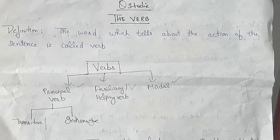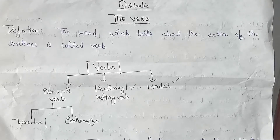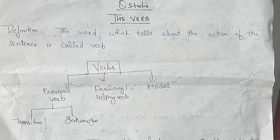So first of all, let's see what is happening. The definition of a verb is: the word which tells about the action of the sentence is called a verb. We are saying that the verb tells the action of a subject or a sentence. The first type is our principal verb.